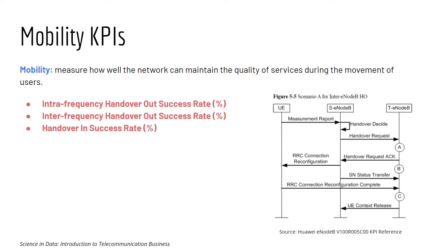There are three KPIs in the Mobility category. Intra-frequency Handover-Out Success Rate measures the success rate of handing over from one cell to another within the same frequency, measured at the source cell. Inter-frequency Handover-Out Success Rate measures the success rate of handing over from one cell to another with a different frequency, also measured at the source cell. Handover-In Success Rate measures the success rate of handover attempts, measured at the target cell.